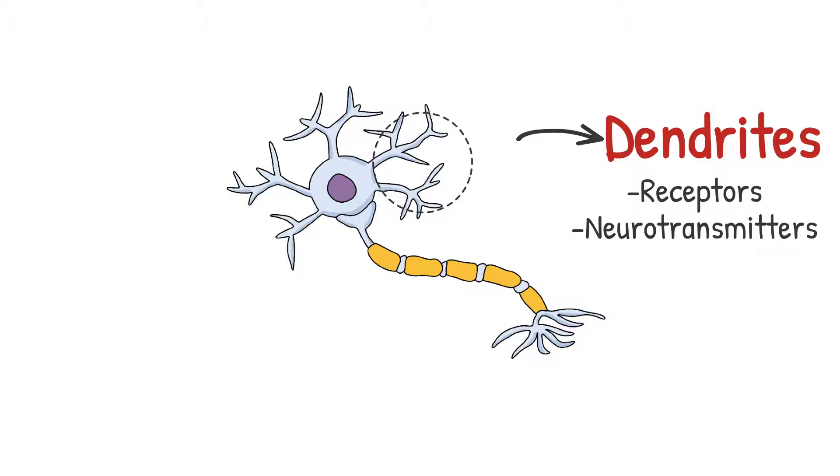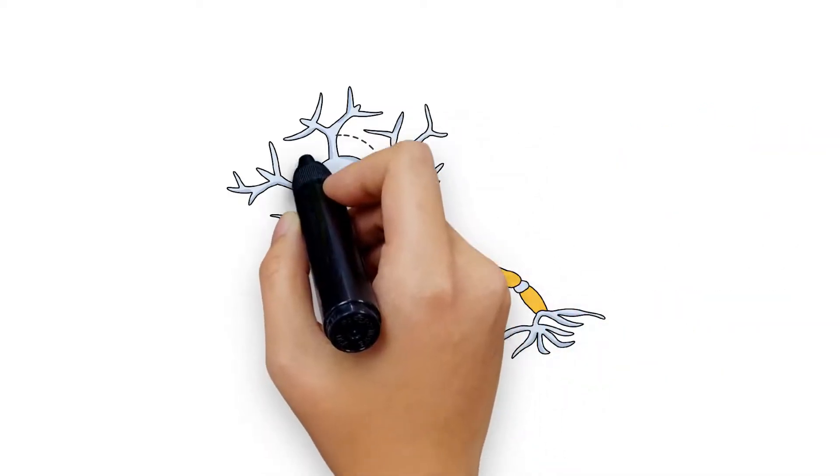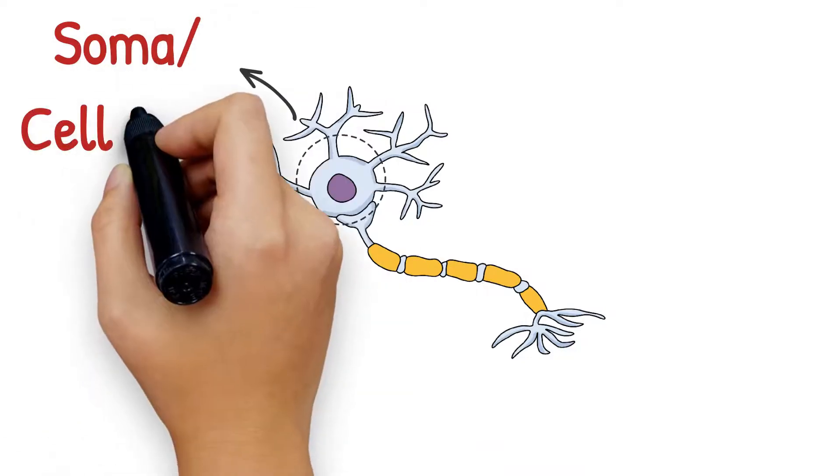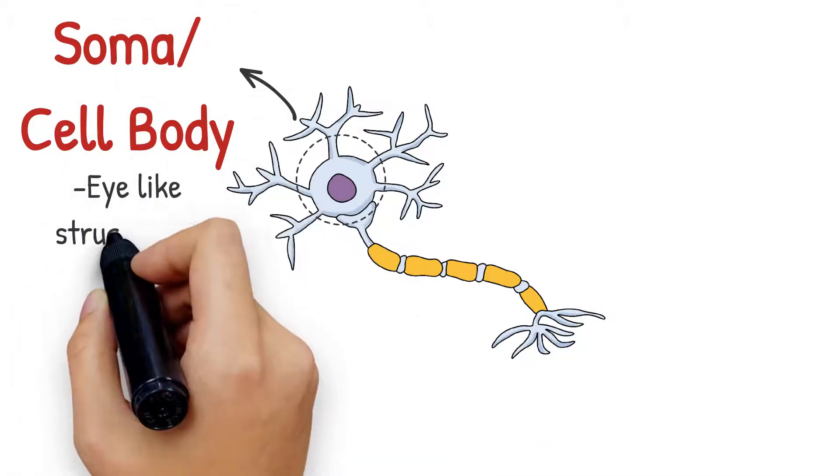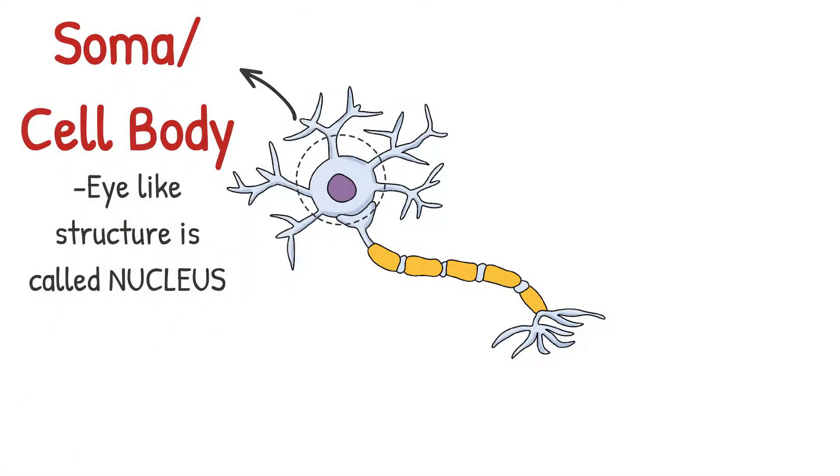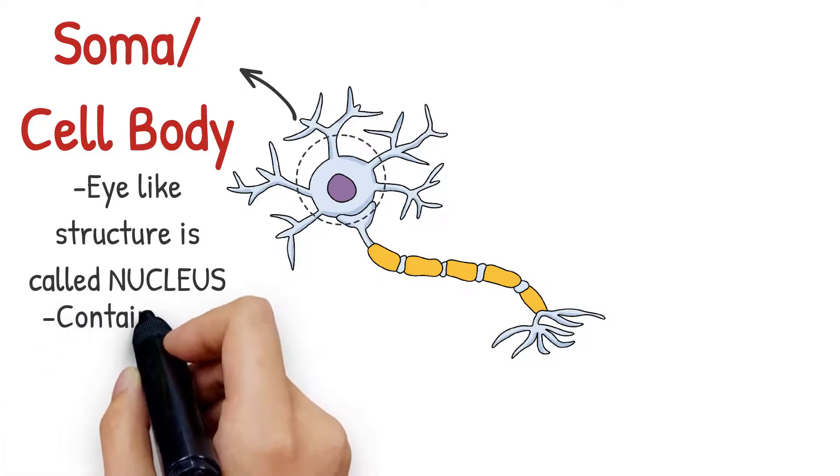These signals then create an electrical impulse in the neuron which is processed in this huge area here called the soma or cell body. The soma has an eye-like structure at its center called the nucleus which contains our genetic information or DNA.